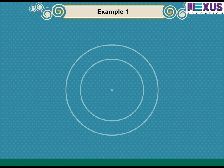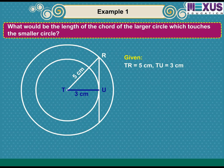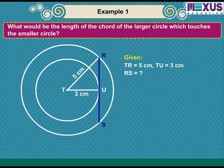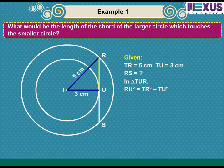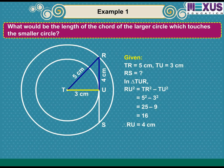Let us solve an example. For two concentric circles of radii 5 cm and 3 cm, what is the length of the chord of the larger circle which touches the smaller circle? Given TR = 5 cm and TU = 3 cm, we need to find RS. In triangle TUR: RU² = TR² − TU² = 25 − 9 = 16, so RU = 4 cm. Since TU bisects RS, RU equals US. Therefore, RS = 2 × 4 = 8 cm.